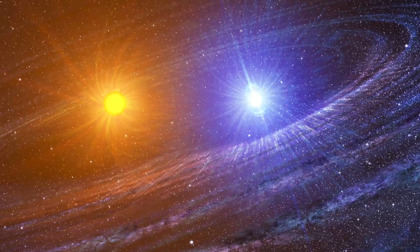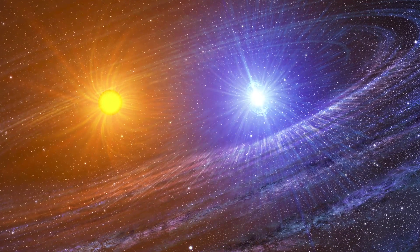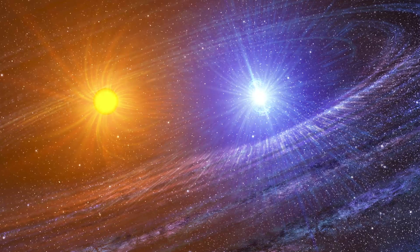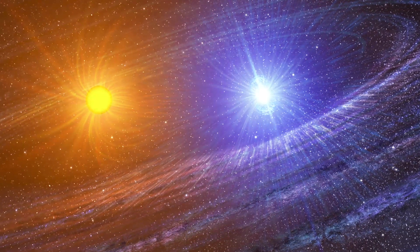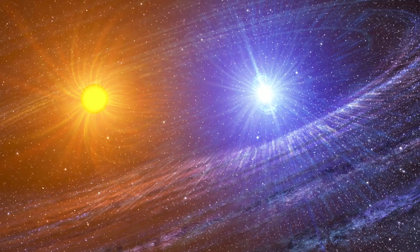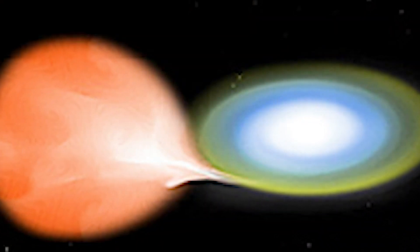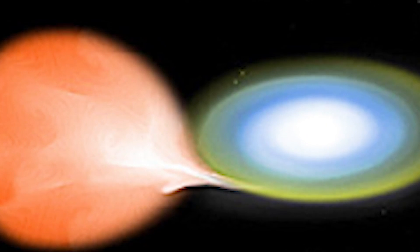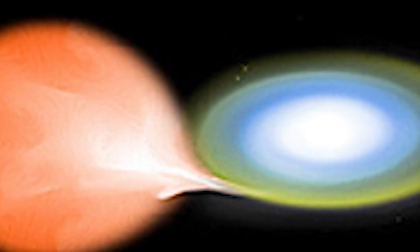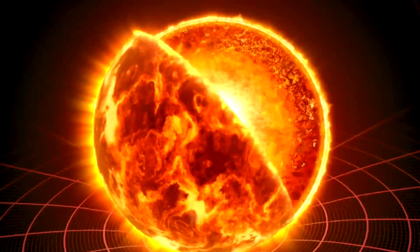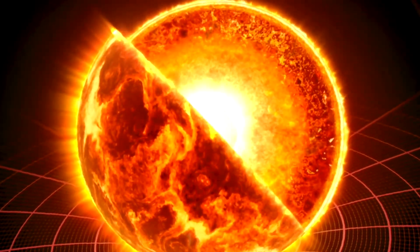Classical novas occur in a binary star system with a white dwarf and a star close enough together that the white dwarf pulls or accretes material from its companion. This material, which is mostly hydrogen, sits on the surface of the white dwarf until enough has been gathered to kickstart a nuclear fusion reaction, the same process that powers the sun.